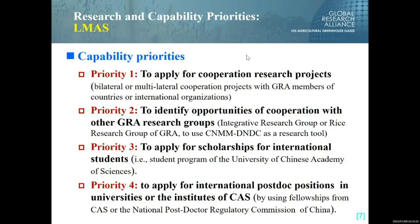For the capability priorities, we have four priorities. The first is to apply for cooperation research projects. The second is to identify opportunities for cooperation with other GRA research groups such as the U.S. research group or the integrative research group, to use this model as a research tool. The third priority is to apply for scholarships for international students. The fourth is to apply for international postdoctoral positions in universities or institutes of the Chinese Academy of Sciences.